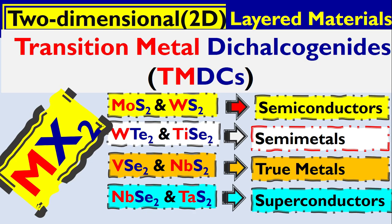The interesting thing is the formula is the same — one transition metal with two chalcogen atoms — but different combinations produce very different properties. Some TMDCs show semiconductor behavior, others show semi-metal behavior, some show true metal behavior, and in another case they exhibit superconductive nature.